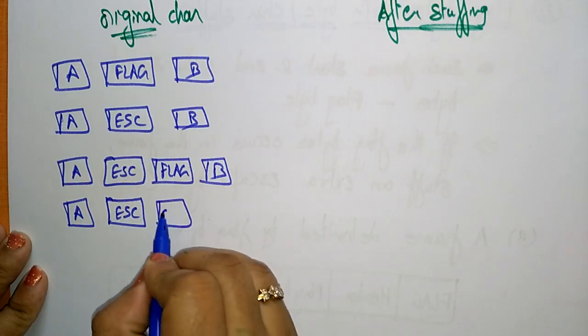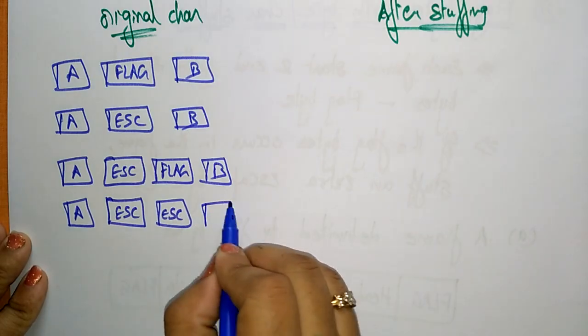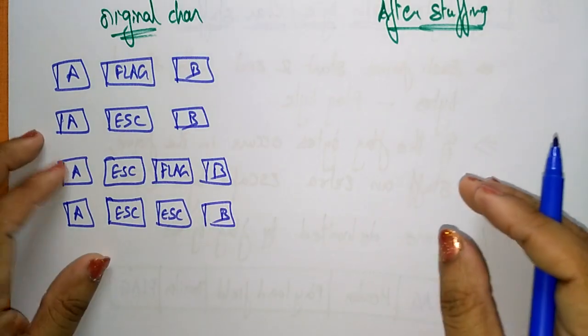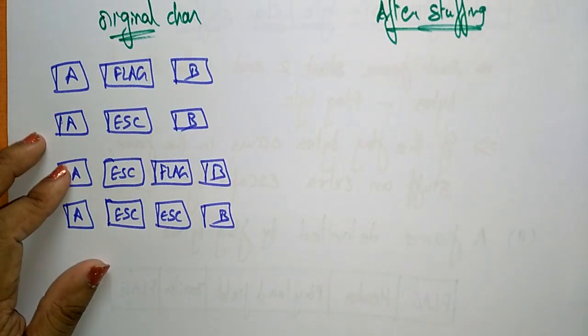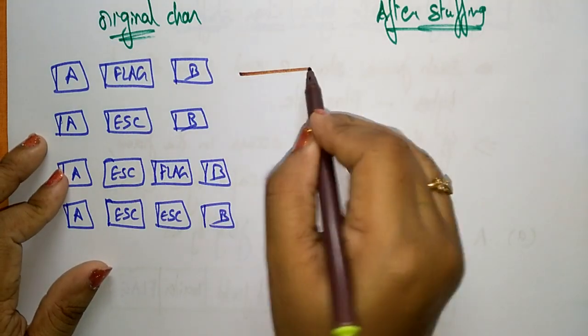The fourth original sequence is: A, ESC, ESC, B. So these are the four original character sequences. Now I want to stuff the flag bytes.